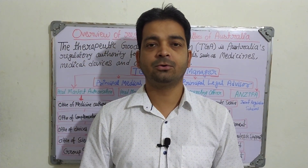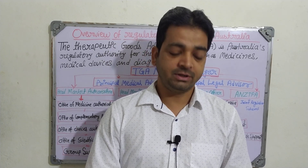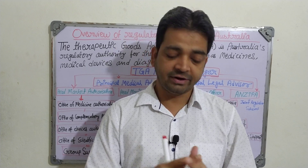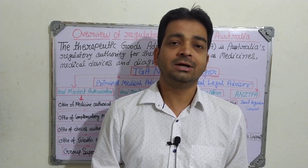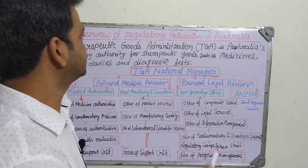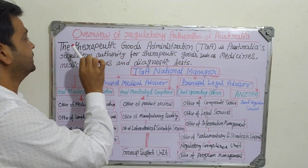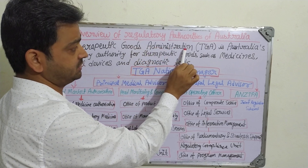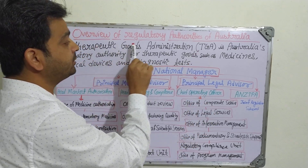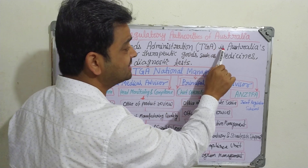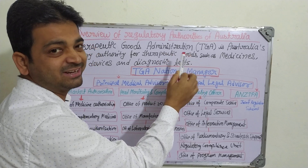Hello students, now we are going to discuss the overview of the regulatory authorities of Australia. The Therapeutic Goods Administration, TGA, is Australia's regulatory authority for therapeutic goods — similar to how the Food and Drug Administration operates in other countries.